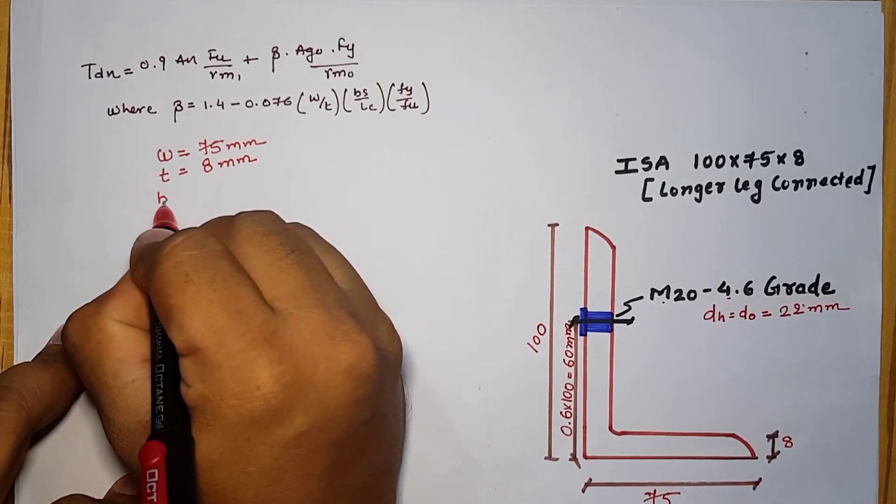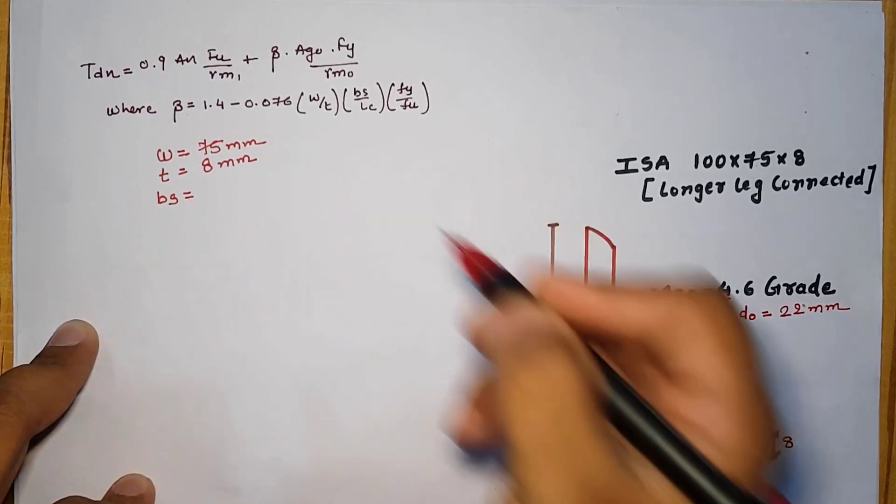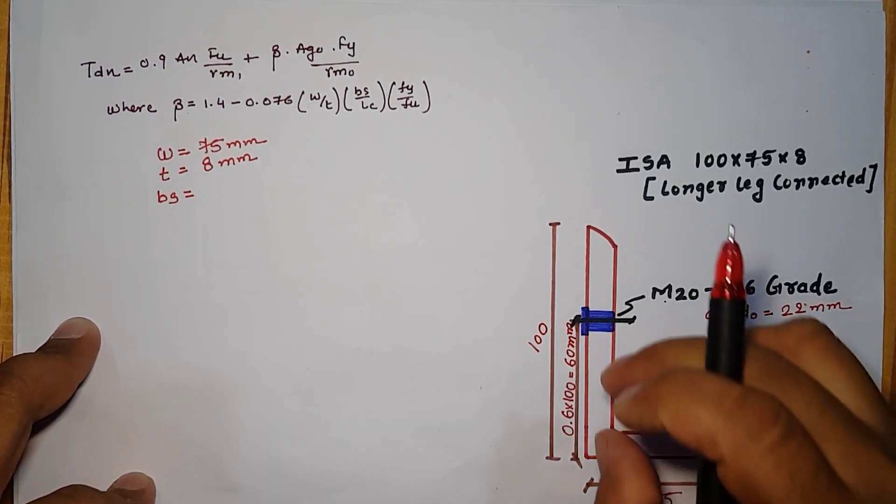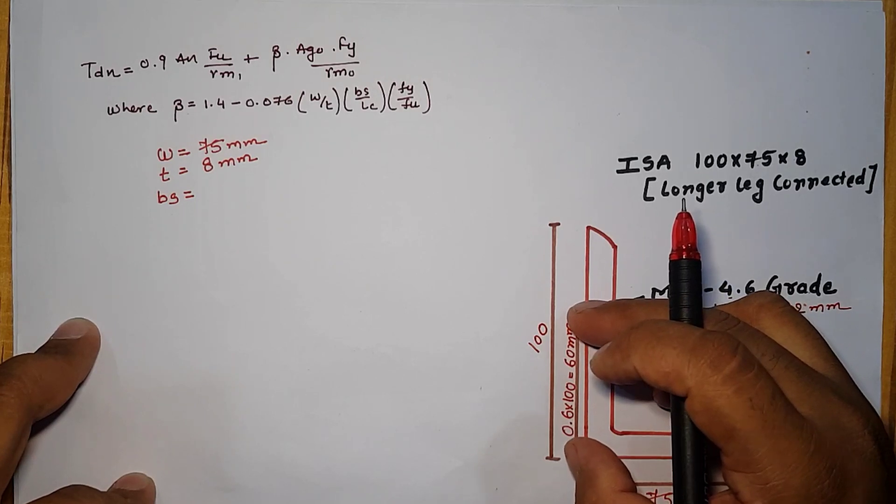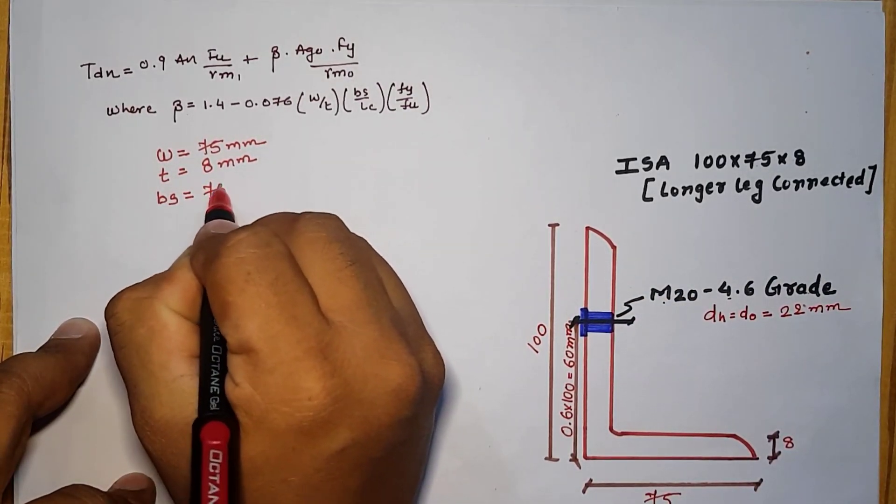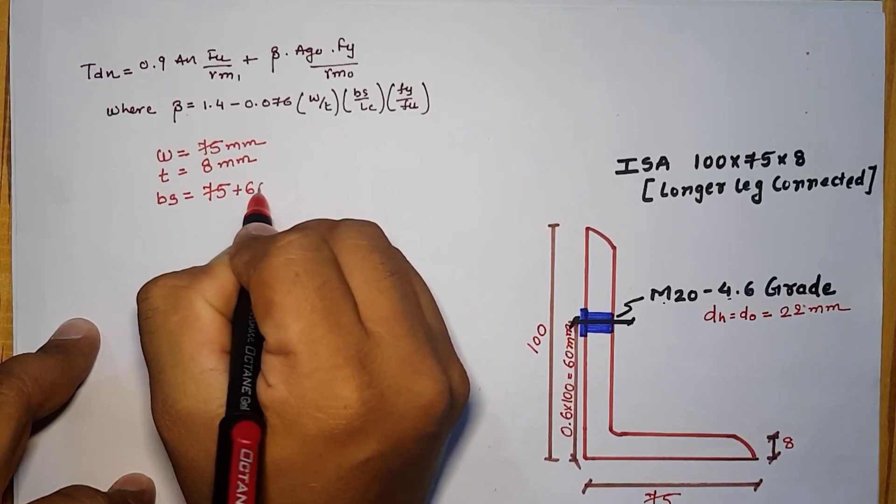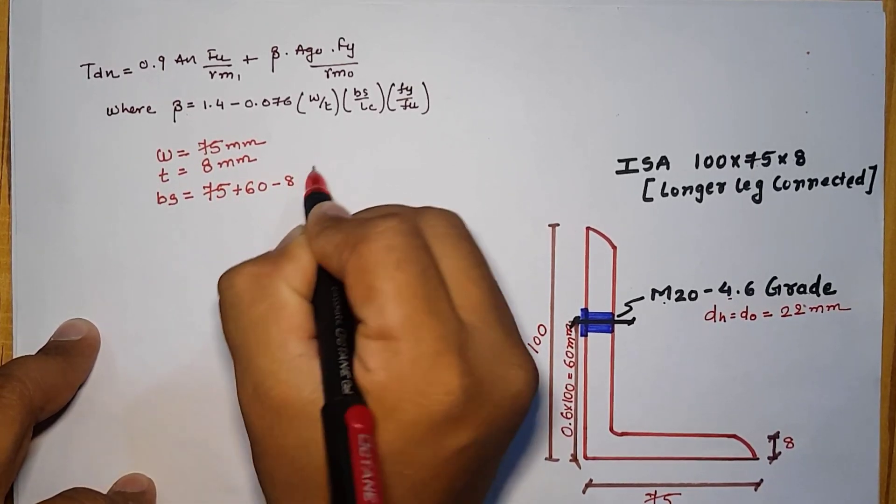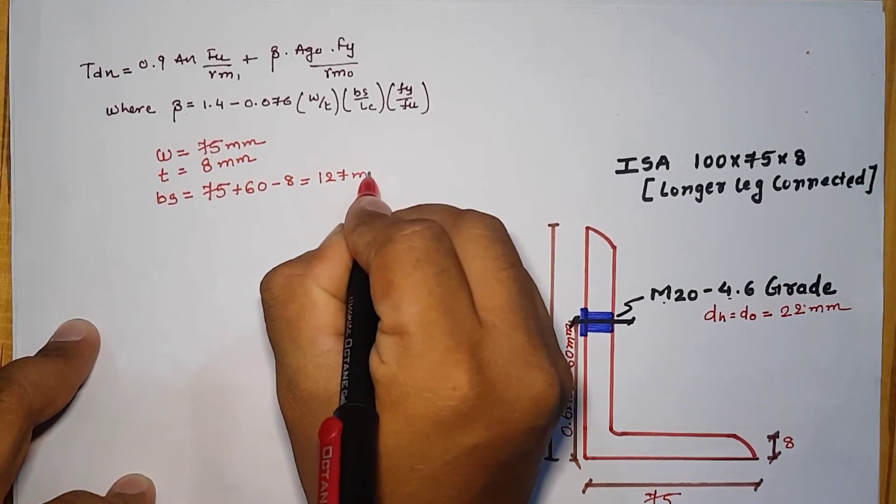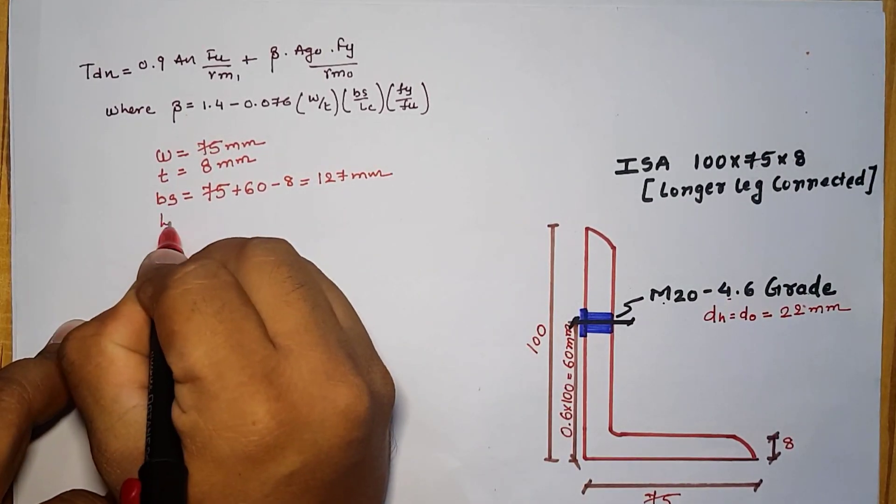Next part BS. BS means the distance of outstand leg plus the distance of center of the bolt minus T. It means that it is 75 plus 60 minus 8 which is equal to 127 mm.